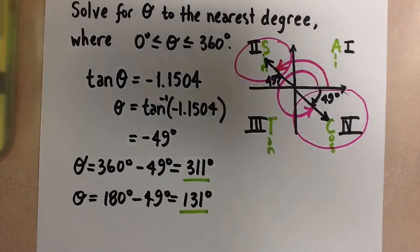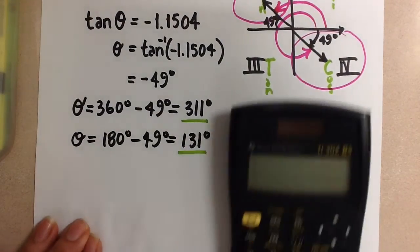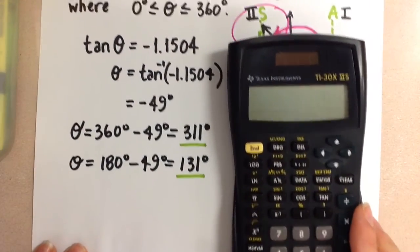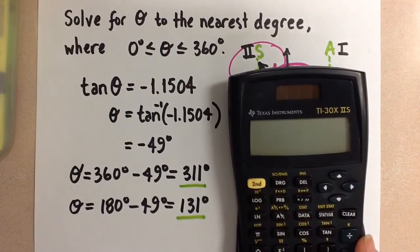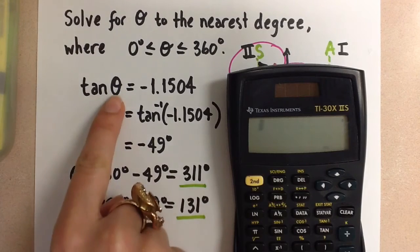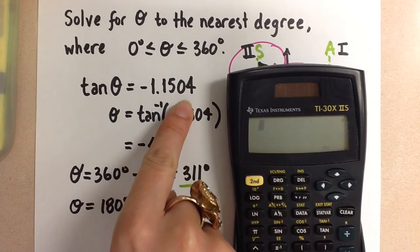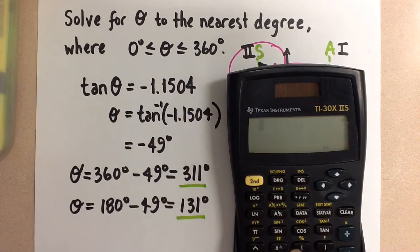We can check this back if you want. You get your calculator. And I'll show you how to do that like this. If you get your calculator, and now we plug in the angle theta that we got here, we should get this negative 1.1504 number. So I'm going to do tangent of 311 degrees.